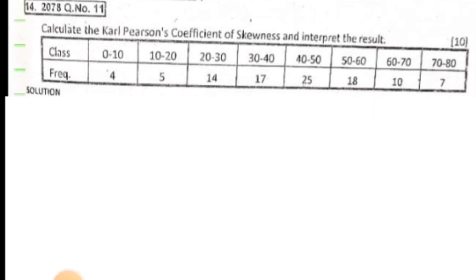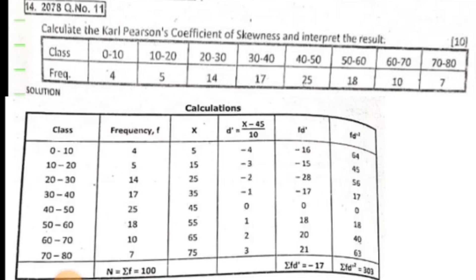We create a calculation table with class intervals, frequency f, and mid value x. X is the mid value, which equals lower limit plus upper limit divided by 2. All class widths are the same, equal to 10. We select d' equals x minus a upon h, where a is the assumed mean and h is the class width.